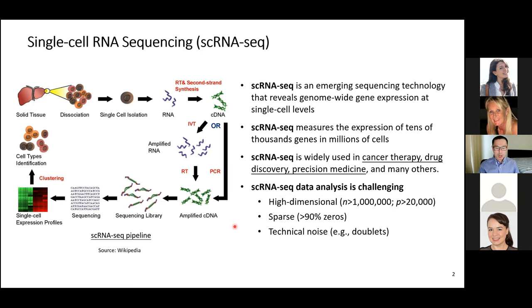The dataset is also very sparse — sometimes more than 90% of values in the data matrix are zeros. Also, because of the experimental pipeline, we can sometimes introduce technical noise, for example doublets, which are our focus today.